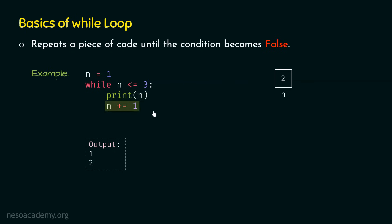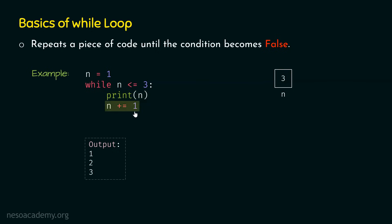After this, n is incremented by 1, so n becomes 3. Again the condition is checked: 3 is not less than 3, but 3 is equal to 3, so the condition is again satisfied. We get inside the while loop and n is printed — value 3 is printed on the screen. After this, n is again incremented by 1, which means n becomes 4. The condition is checked: 4 is neither less than 3 nor equal to 3, so this condition is not satisfied — we get false and exit the while loop. In this way, we have executed these two lines of code a total of three times. This is how we can repeat a piece of code using a while loop.